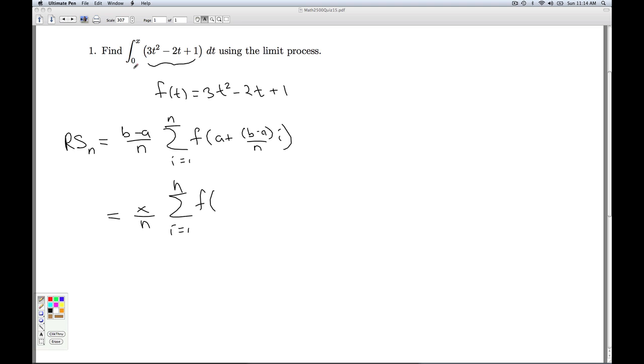Once again, a is the lower limit of integration, which is 0, and b minus a over n is x over n. So I just get x times i over n. I substitute that into my function f of xi over n. And what do I get? 3 times xi over n squared minus 2 times xi over n plus 1.